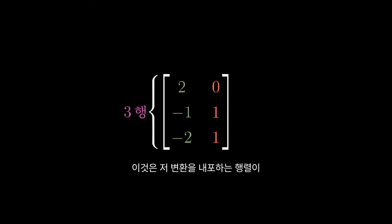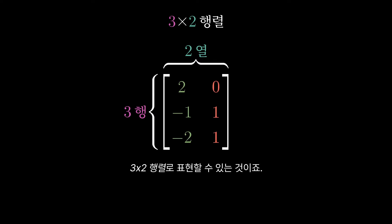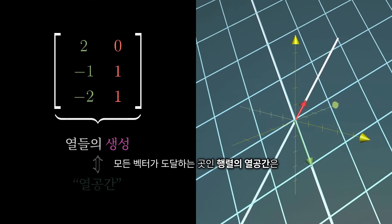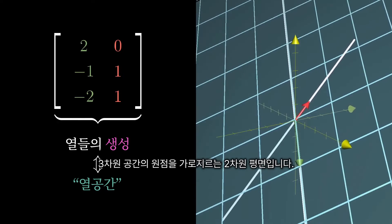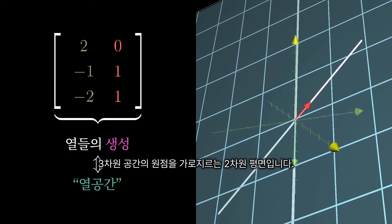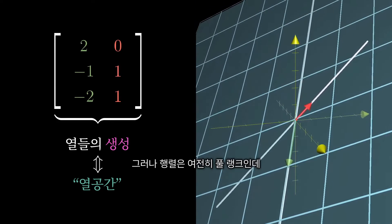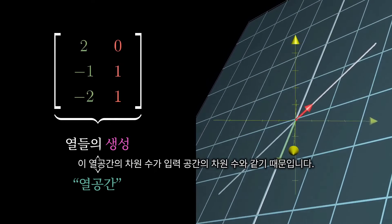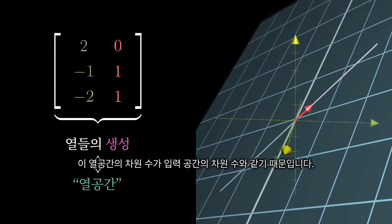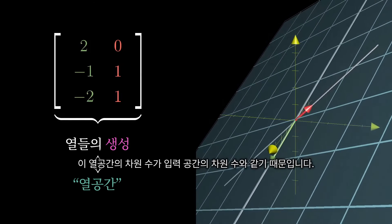Notice, this means the matrix encoding our transformation has 3 rows and 2 columns, which, to use standard terminology, makes it a 3 by 2 matrix. In the language of last video, the column space of this matrix — the place where all the vectors land — is a 2D plane slicing through the origin of 3D space. But the matrix is still full rank, since the number of dimensions in this column space is the same as the number of dimensions of the input space.